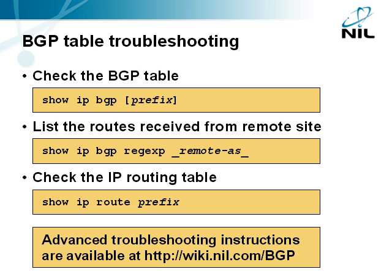We used the following commands to troubleshoot the BGP table. The show IP BGP command displays the BGP table contents — you can use an IP prefix you want to check as the parameter. The show IP BGP regexp command displays all routes where the AS path matches the specified regular expression. To match the remote AS number, wrap it in a pair of underscores. When you verify that the IP prefix from the remote site is in the BGP table, use the show IP route command to verify it's also present in the IP routing table. If a BGP route that resides in the BGP table is not copied into the IP routing table, you will have to perform more complex BGP troubleshooting — find the guidelines in the BGP Resource Center at wiki.nil.com/bgp.